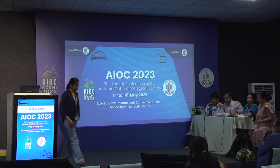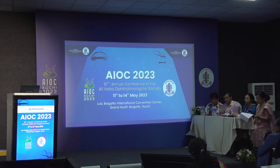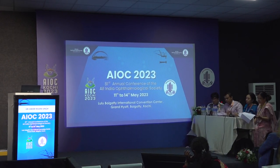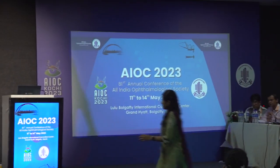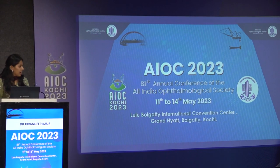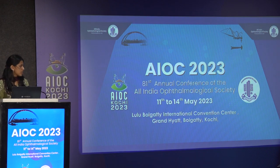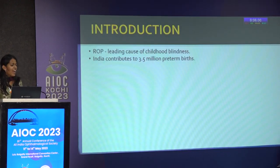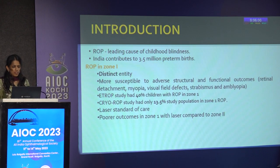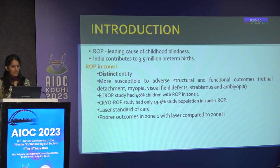Dr. Nikita Gupta is invited to present on structural, biometric and refractive outcomes of two treatment strategies in Zone 1 ROP. ROP in Zone 1 is a distinct entity more susceptible to adverse structural and functional outcomes. Landmark studies like ETROP and cryo-ROP had less than 50% of their study population in Zone 1 and showed laser as the standard of care, but poorer outcomes were seen in Zone 1 compared to Zone 2. Studies like BEAT-ROP and RAINBOW showed success with bevacizumab and ranibizumab.